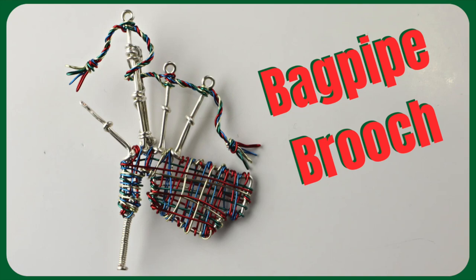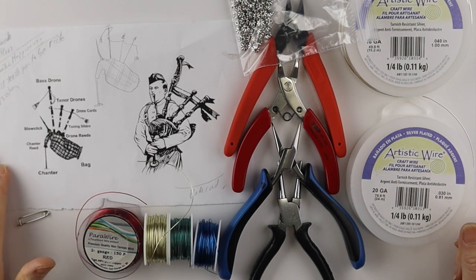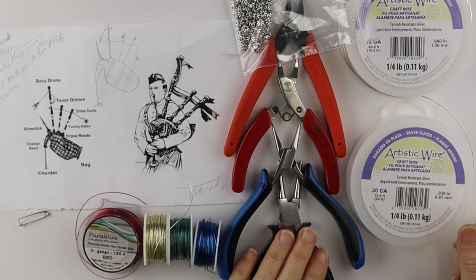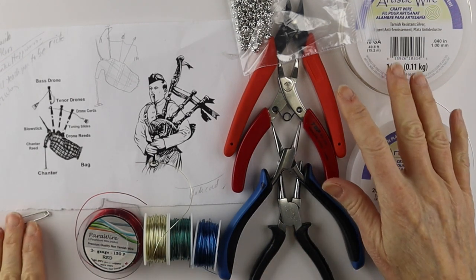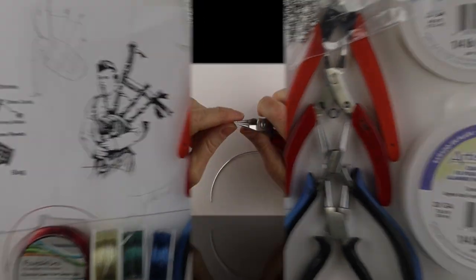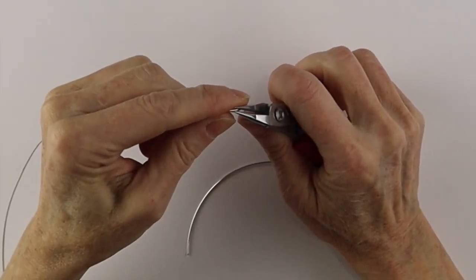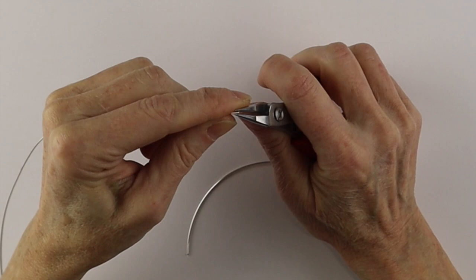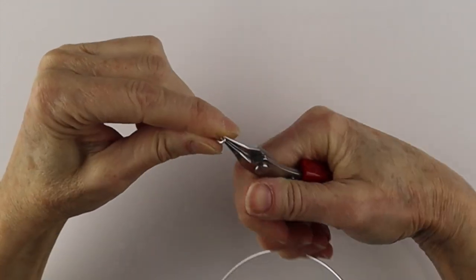I made this bagpipe brooch for our friend Dave. I used a little diagram, my artistic wire and my tools, and I started with a piece of 20 gauge wire. At one end I just formed a little loop with my round pliers.